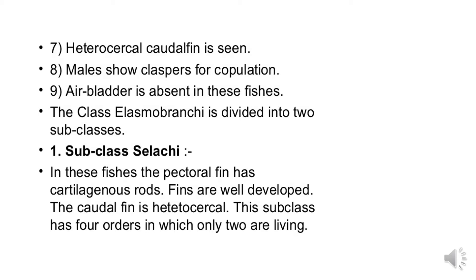The first subclass is Elachi. In these species, the pectoral fin has a cartilaginous rod with cartilaginous rays present. Fins are well developed and the caudal fin is heterocercal, having two unequal lobes. This subclass has four orders, of which only two are living, and it is further divided into four orders.